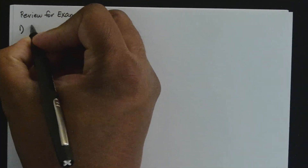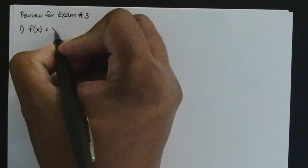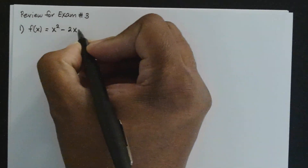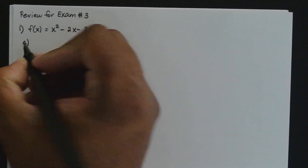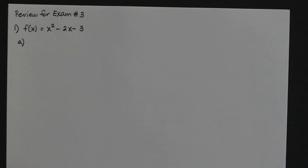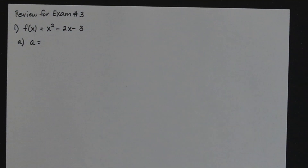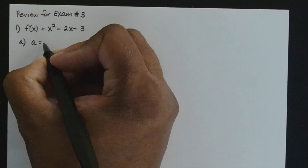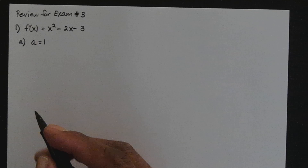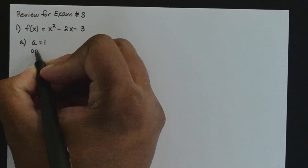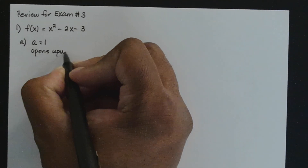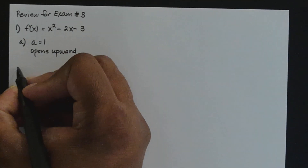In problem number one, the function f of x is equal to x squared minus 2x minus 3. In part a, we want to determine whether the parabola opens upward or downward. We need to identify a, the coefficient of the x squared term, since it's in general form. If a is positive, the parabola opens upward; if a is negative, it opens downward. Here a is 1, which is positive, so the parabola opens upward.